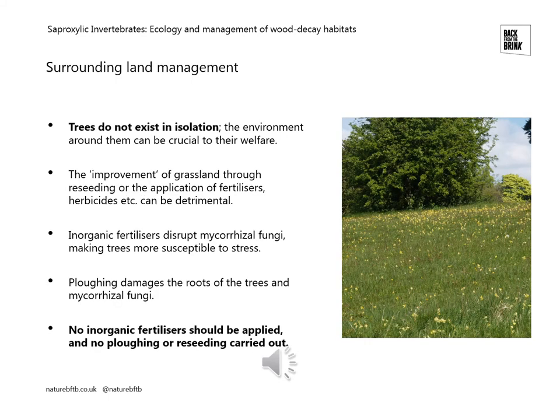It's also important to remember that trees do not exist in isolation, so the environment around them can be crucial to their welfare. In particular, the way we manage grasslands around ancient trees is really important. The improvement of grasslands through reseeding or the application of fertilizers, herbicides, or fungicides can be detrimental to trees and the saproxylic invertebrates that rely on them. Inorganic fertilizers are known to disrupt mycorrhizal fungi that are important to trees, making them more susceptible to stress and potentially causing them to die at a younger age. Plowing also damages tree roots and interferes with mycorrhizal fungi. In an ideal situation, we should avoid inorganic fertilizers and avoid plowing or reseeding grasslands near ancient trees.